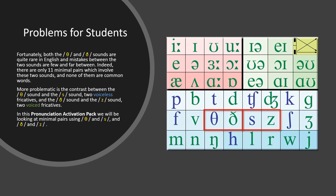Problems for Students. Fortunately, both the TH and TH sounds are quite rare in English, and mistakes between the two sounds are few and far between. Indeed, there are only 11 minimal pairs which involve these two sounds, and none of them are common words. More problematic is the contrast between the TH sound and the S sound — two voiceless fricatives — and the TH sound and the Z sound, two voiced fricatives. In this Pronunciation Activation Pack we will be looking at minimal pairs using TH and S, and TH and Z.